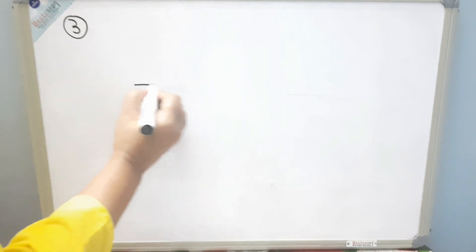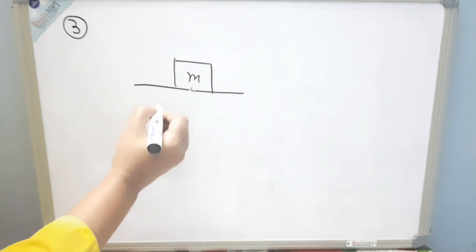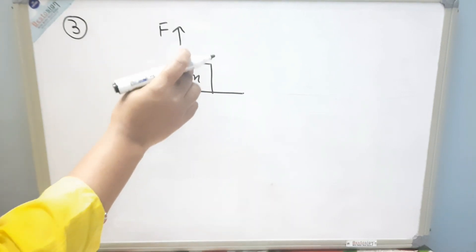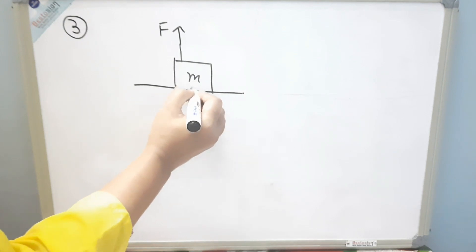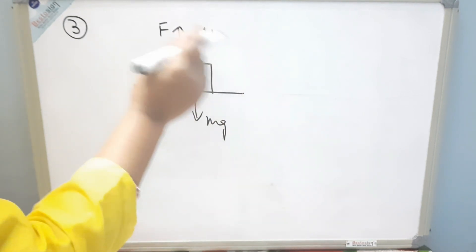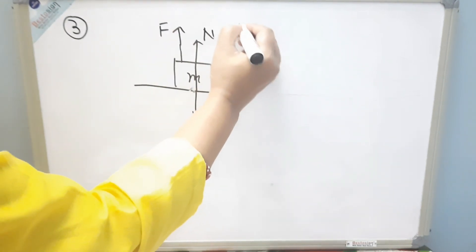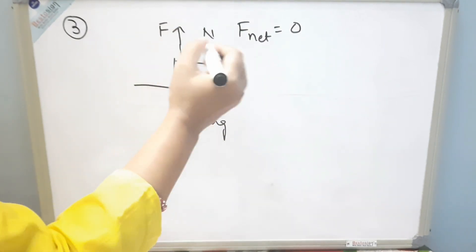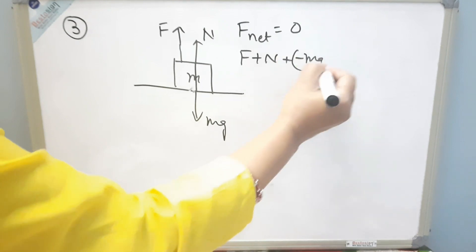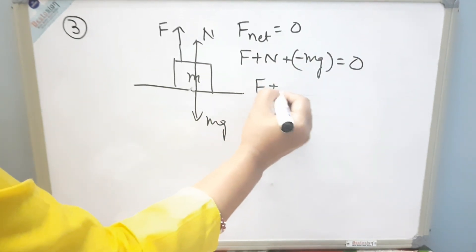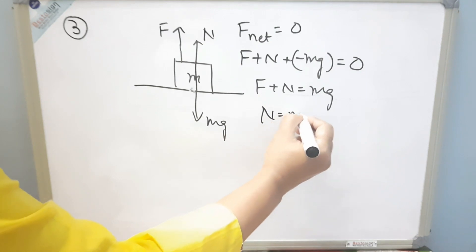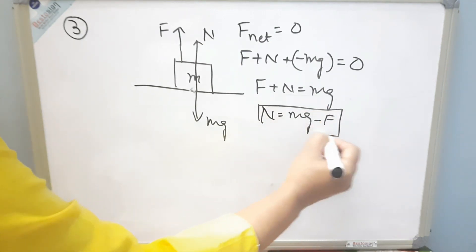In the third situation, there is an object of mass m resting on a surface and one force F acts upward on the object. To find the normal reaction force, mg acts downward and N acts upward. Since the object is at rest, f_net equals zero. Adding all forces: F plus N minus mg equals zero, so N equals mg minus F.